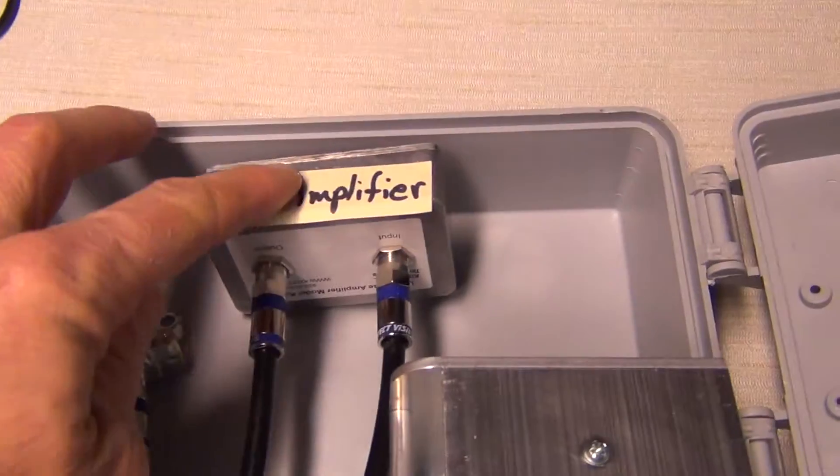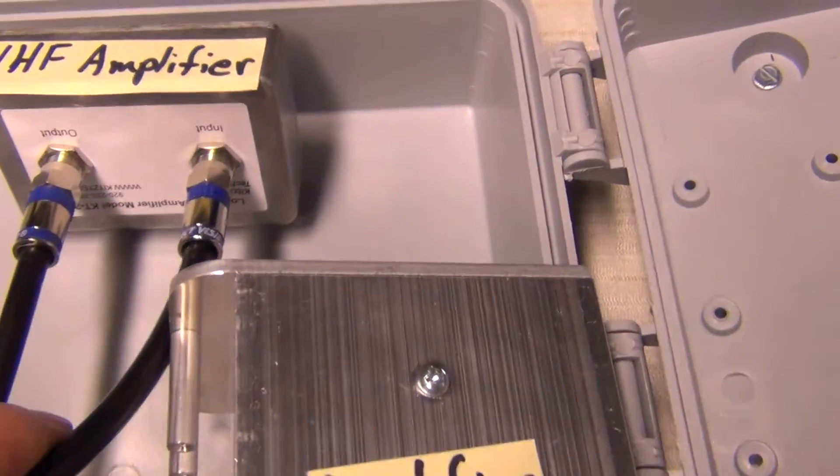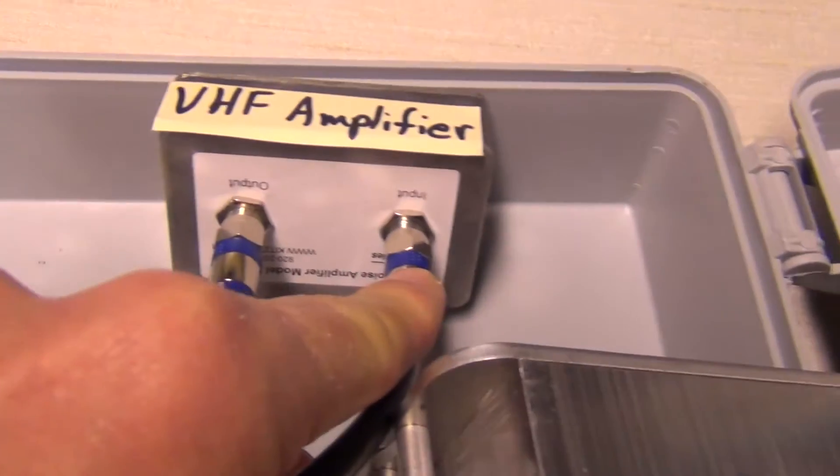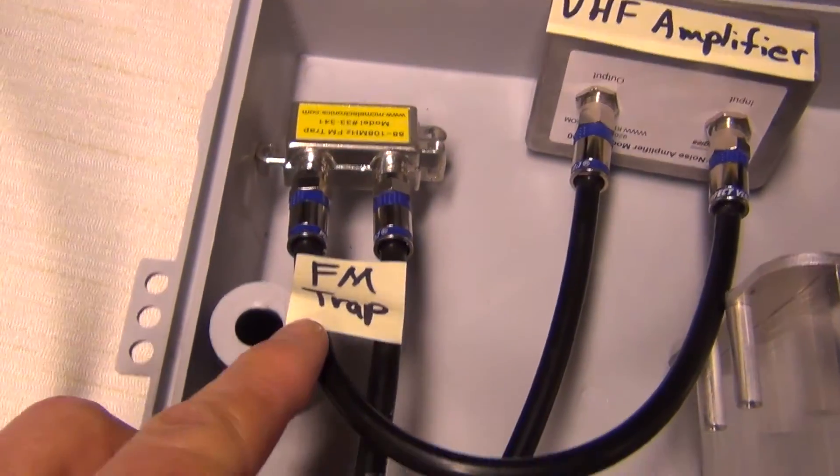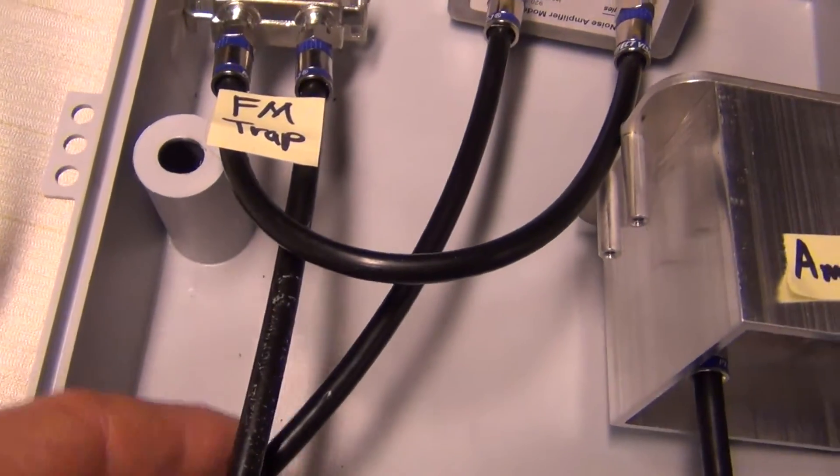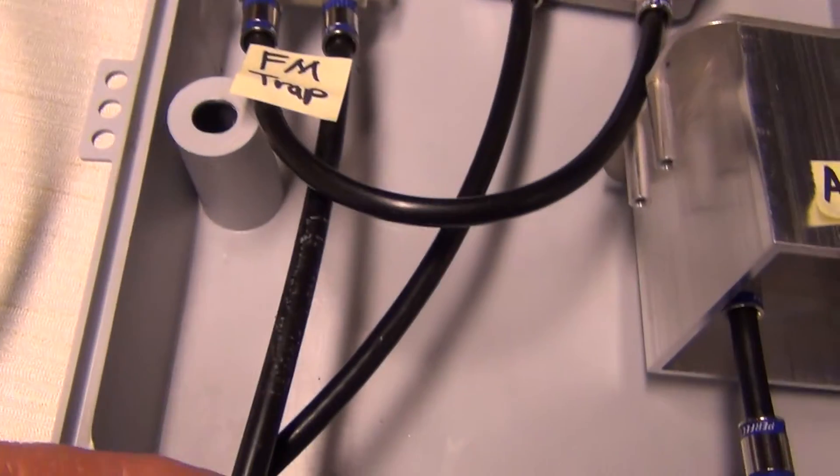And this doesn't have the FM trap, that's why that's in there. So you'll see input right there. And that's going to the FM trap. And then this other one here, this wire here coming on this side, that goes to the antenna.